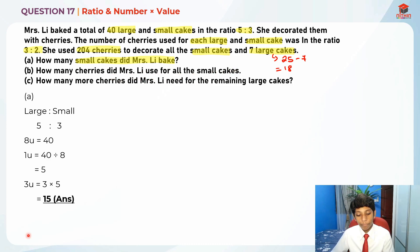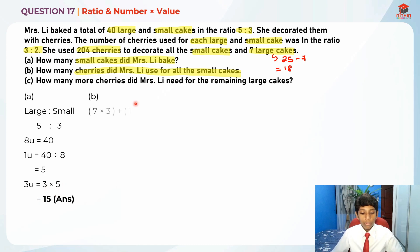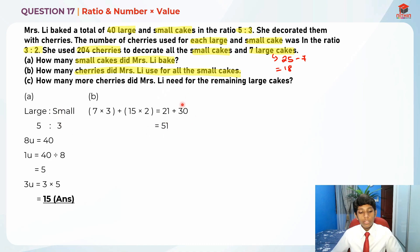Cherries were used in the ratio 3 to 2 for large to small cakes. So we take 7 times 3 plus 15 times 2, which gives us 21 plus 30 = 51. This uses the number times value approach. We then take 204 cherries divided by 51 to find the number of groups, which gives us 4.